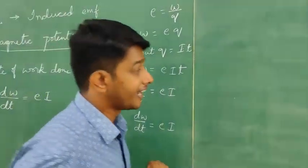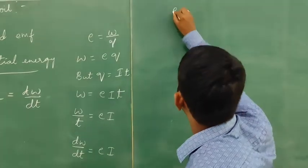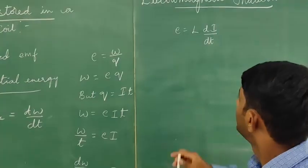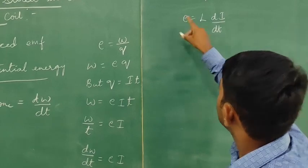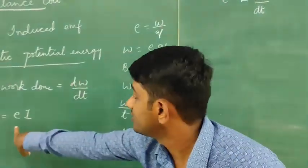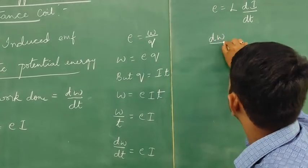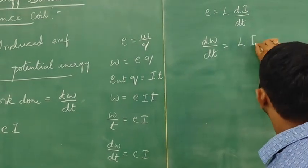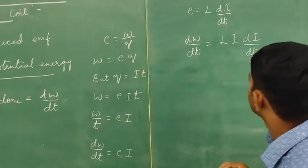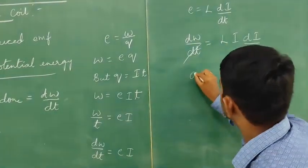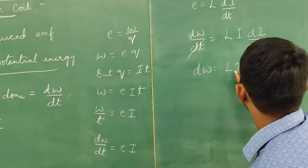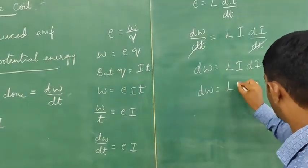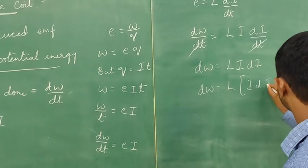Now let us write the expression for self-inductance: E is equal to L·di/dt. Substituting the value of E into the equation, dW/dt is equal to L·i·di/dt. Now dt cancels on both sides, giving us dW = L·i·di.